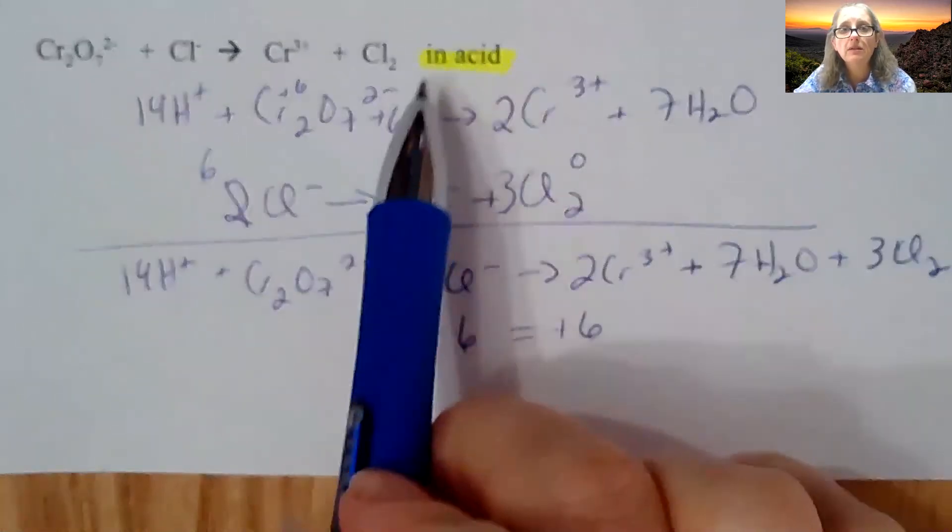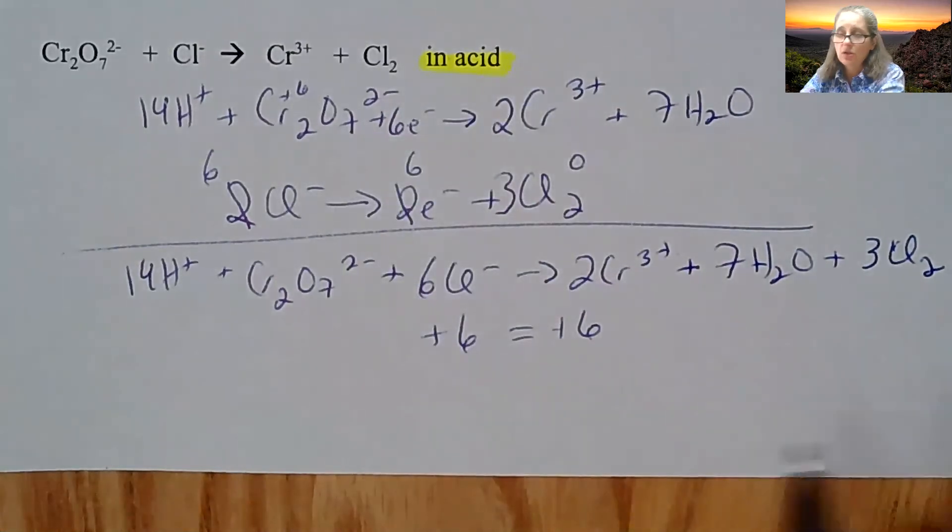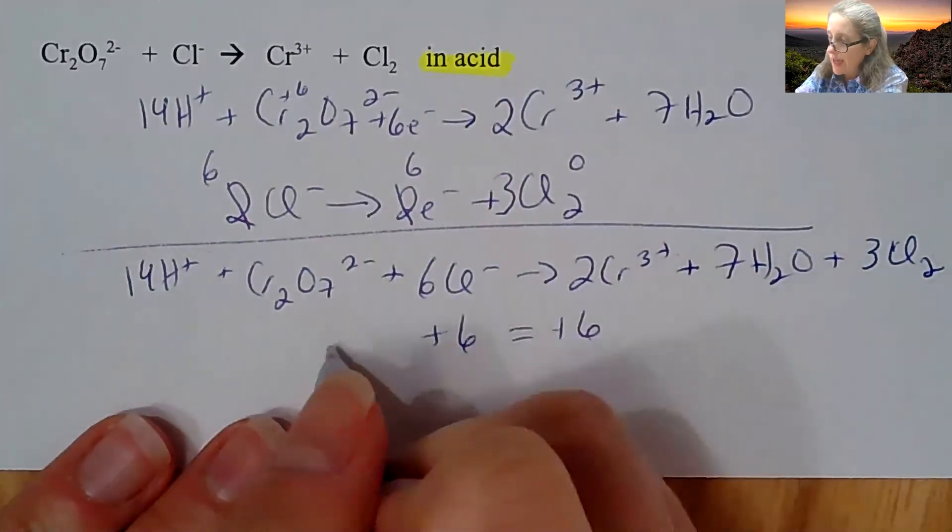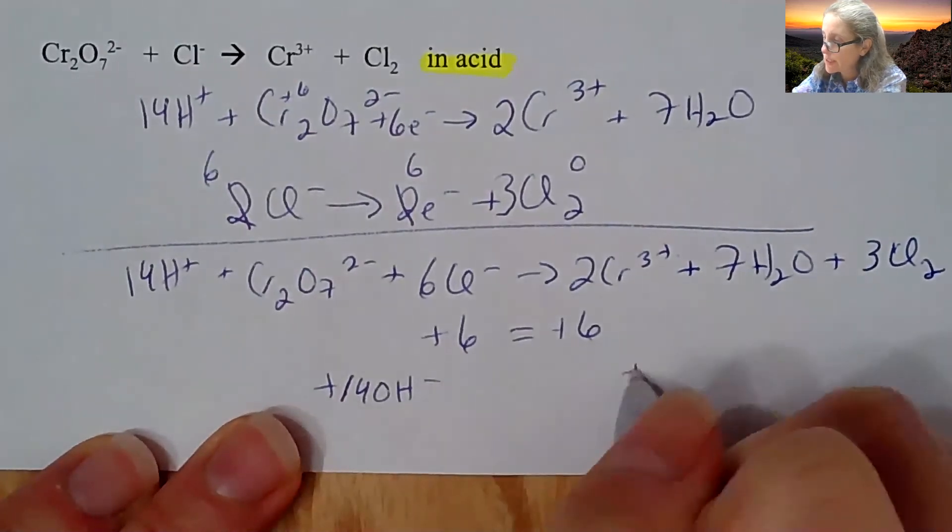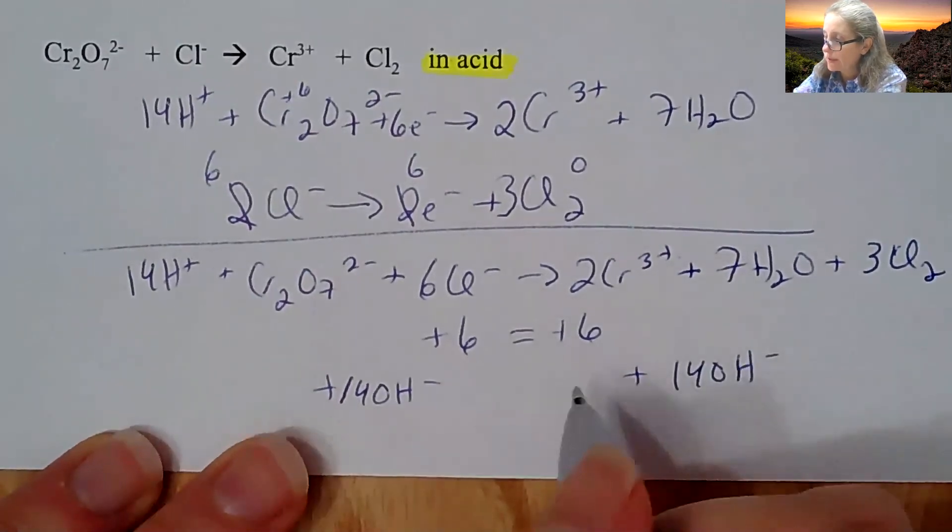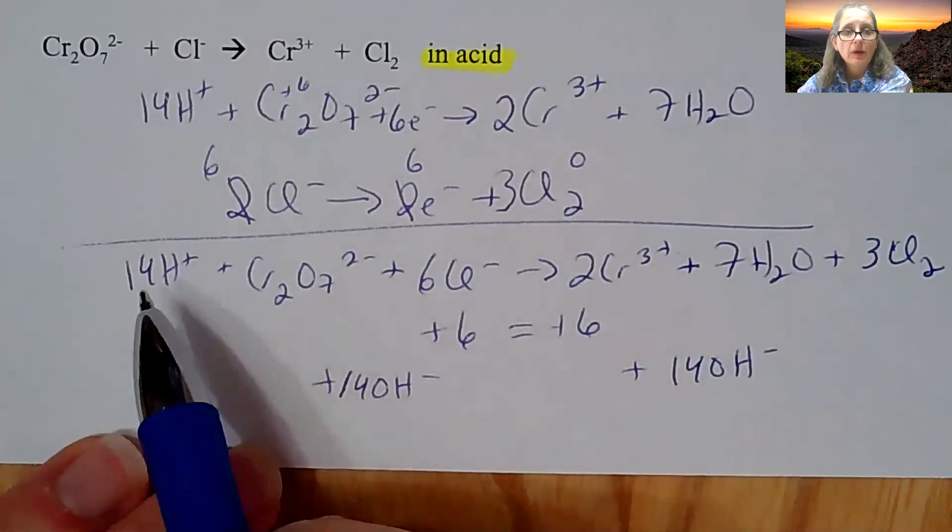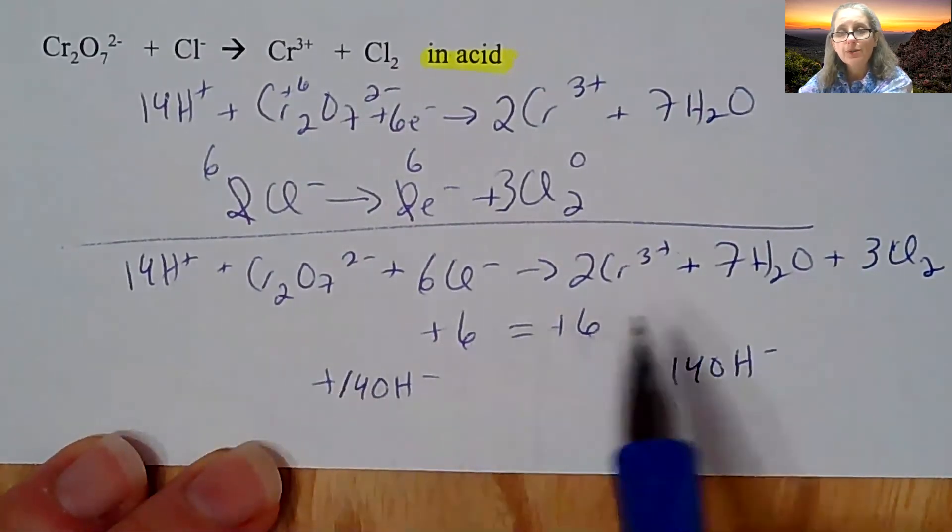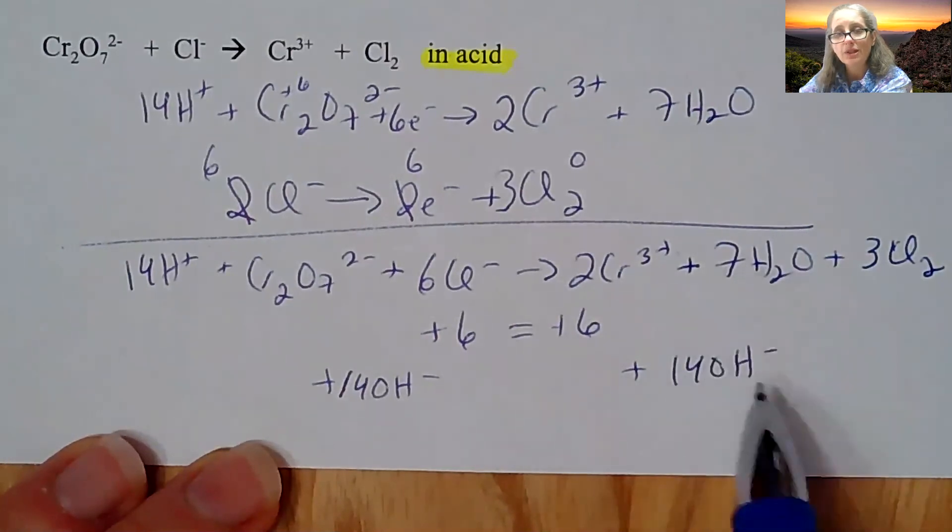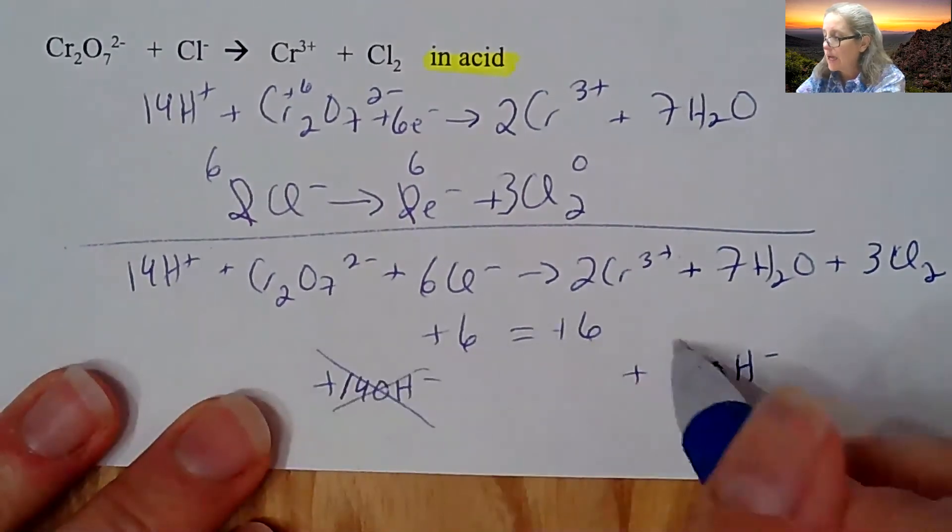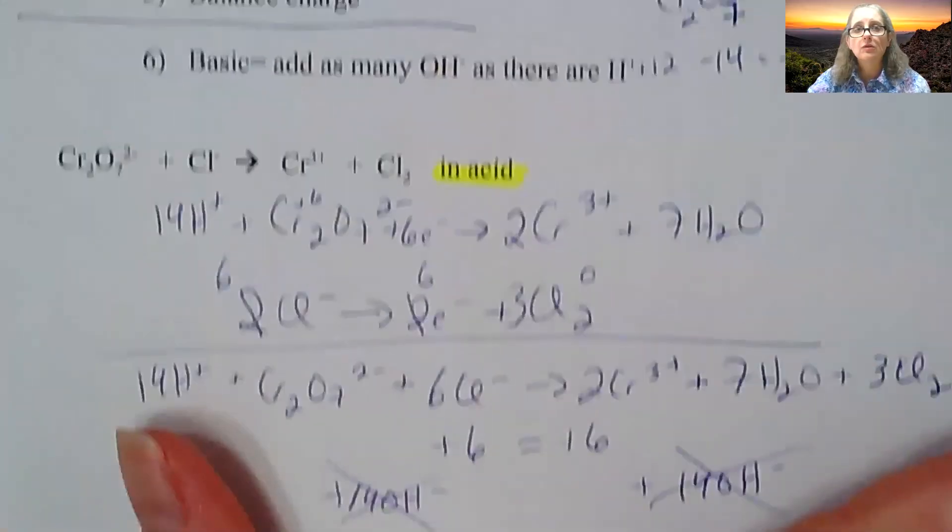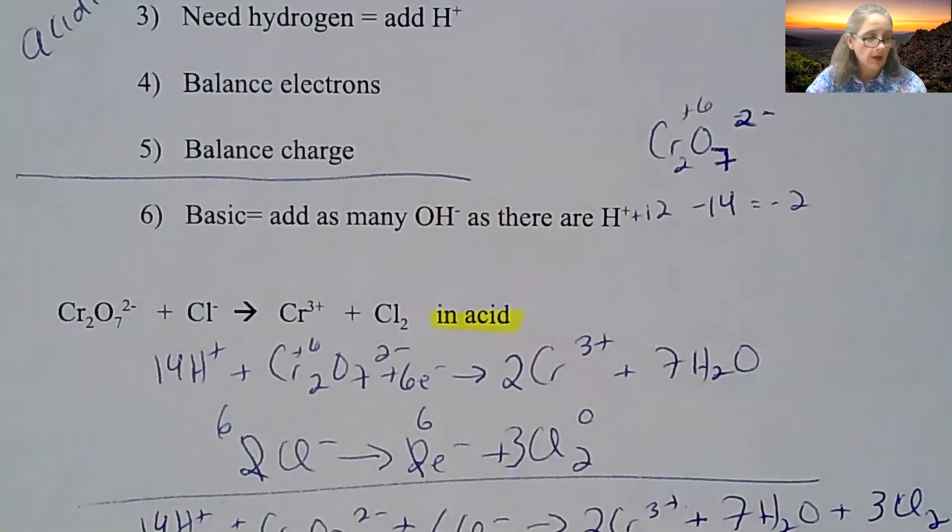What if this happened to be in a basic solution? Again, it would be telling you that up here. So just a quick reminder, I would have to add 14 OH^- to both sides in order for it to be legitimate. It would make this 14 waters, so you would cancel out the seven waters here, and then you would leave the OH^- on one side or the other. So again, just a quick review of how to do the balancing that we talked about in first semester.